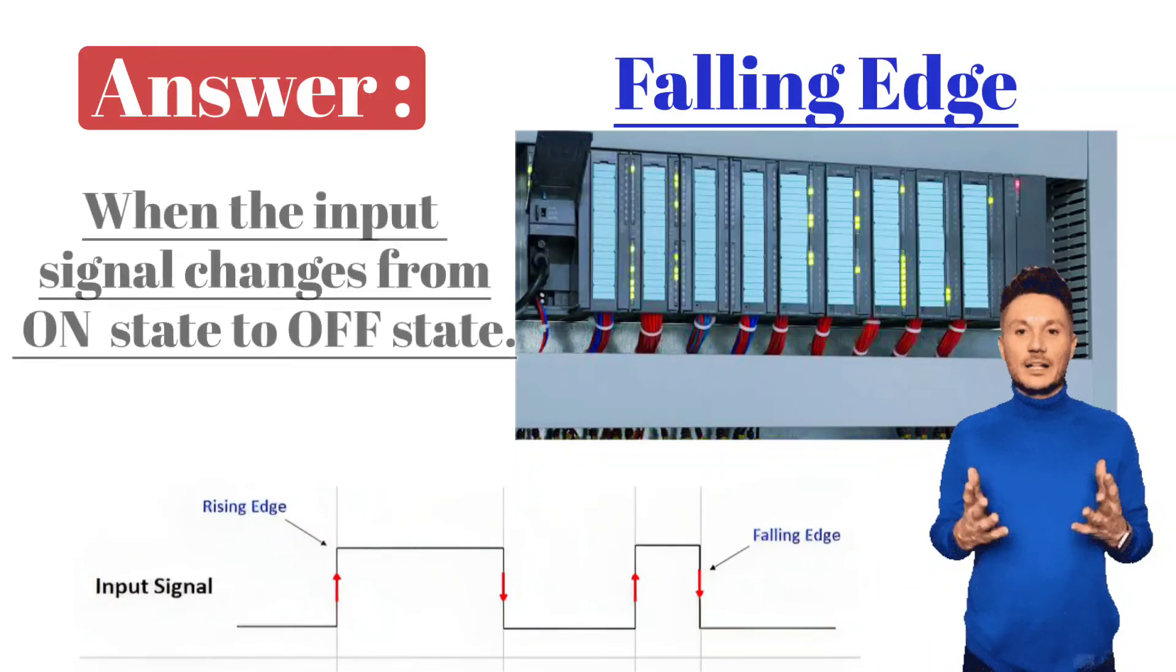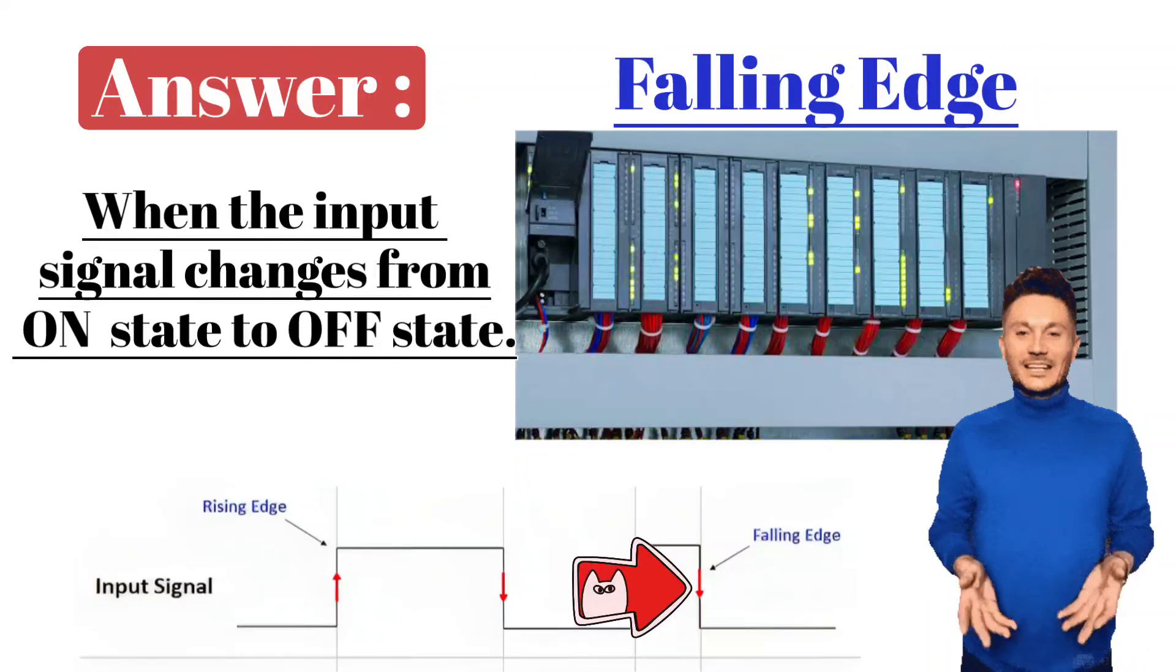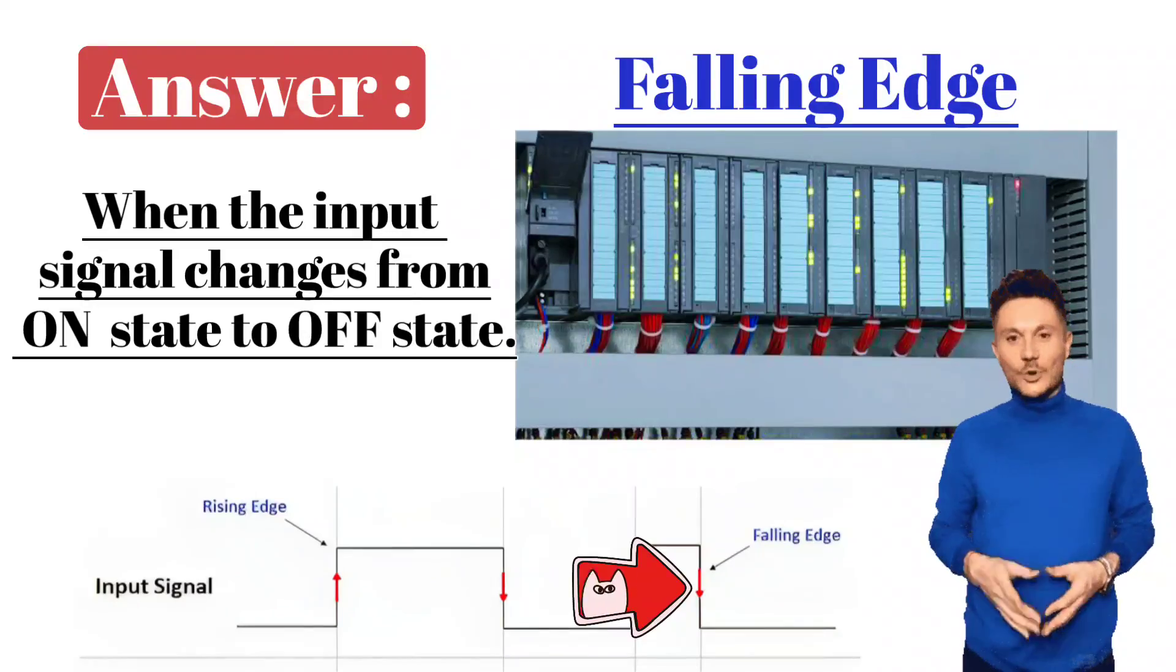Falling edge means when the input signal changes from ON HIGH state to OFF LOW state.